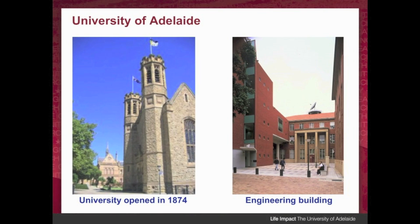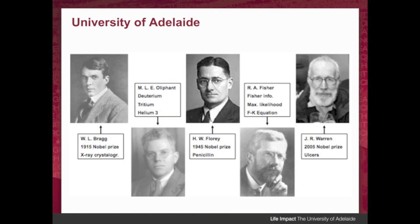Just a brief word about who we are. The University of Adelaide is based in the south of Australia and we opened in 1874. Here's the engineering building where I work. We're famous for a number of Nobel Prize winners — the three at the top and other famous scientists at the bottom.